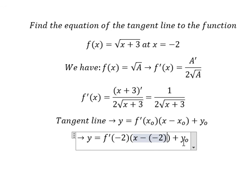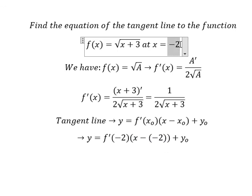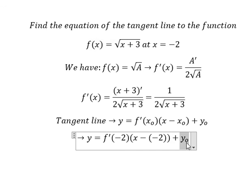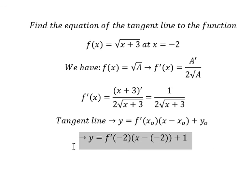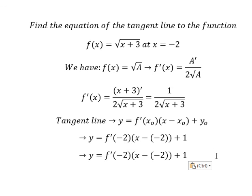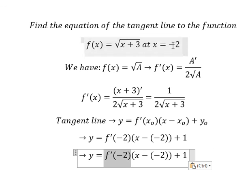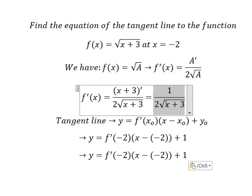We put negative two into this function. So negative two gives us three minus two, which equals one. The square root of one is one.